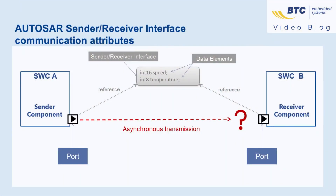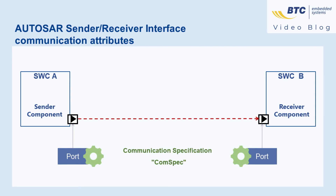When a sender component transmits data, the receiver does not necessarily access it immediately. Therefore, AutoZar defines several attributes on the component port to manage the communication. These attributes are grouped into an object named communication specification, also called comspec.